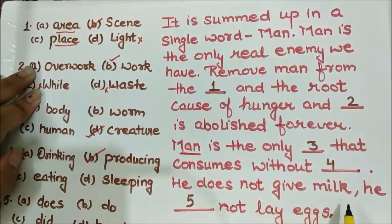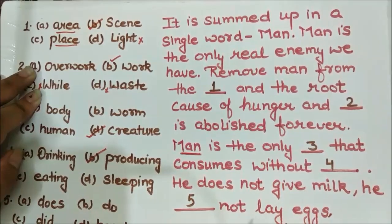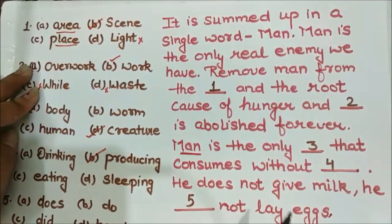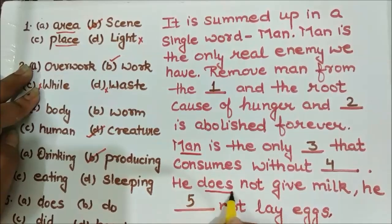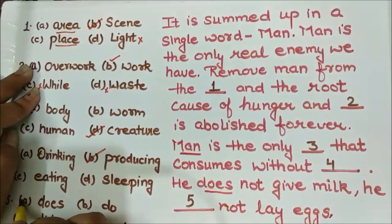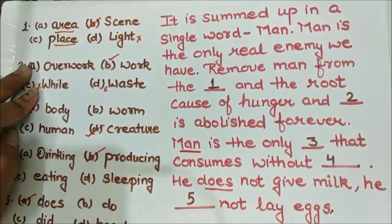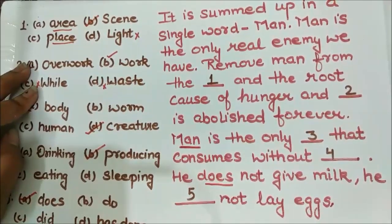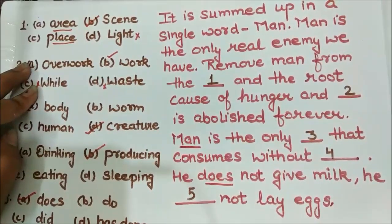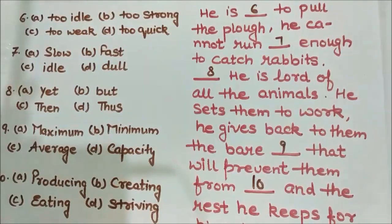The fifth blank: 'He ___ not lay eggs.' He does not give milk — similarly, he does not lay eggs. This is a very obvious one. So option A, 'does,' gives us: 'He does not lay eggs.'